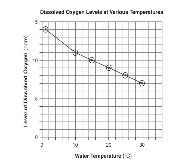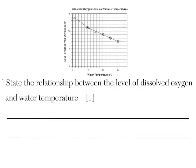Now, what if you don't know the relationship between two things? Like for example, this one is water temperature and level of dissolved oxygen. That's a real regents question. Here's what they ask you. State the relationship between the level of dissolved oxygen and water temperature.